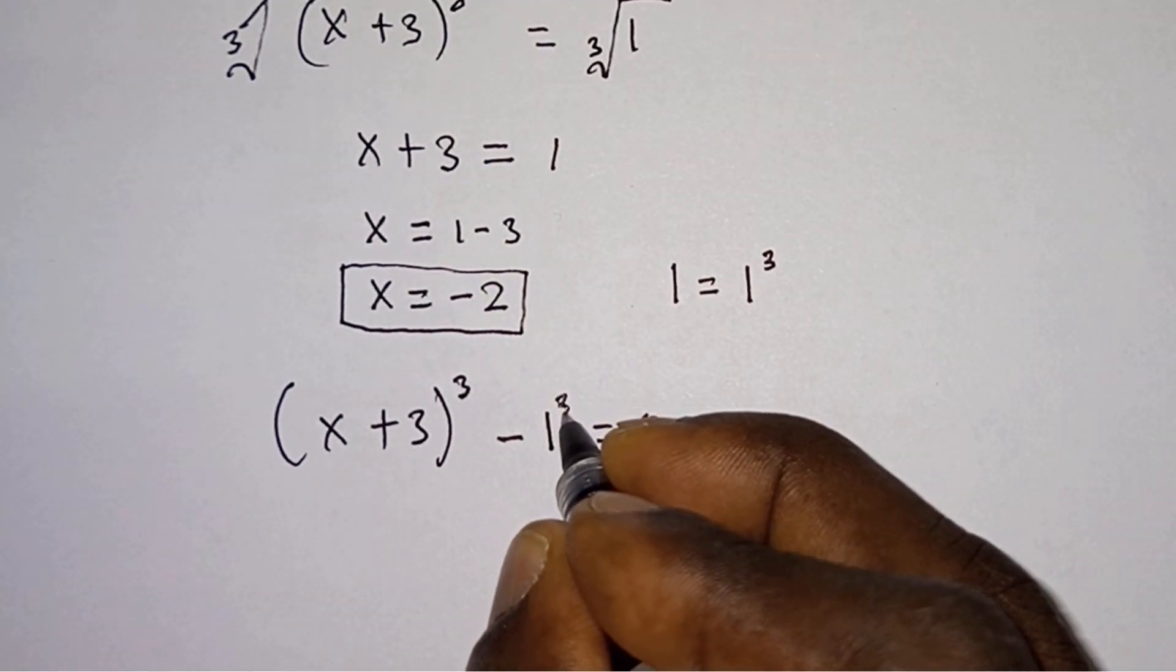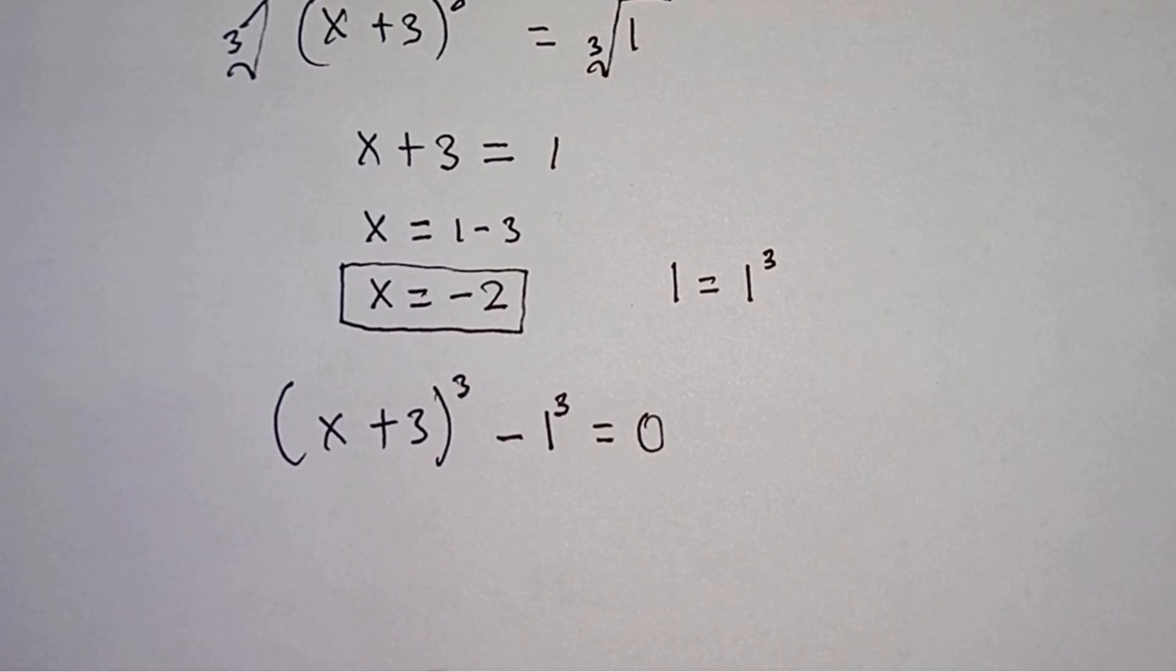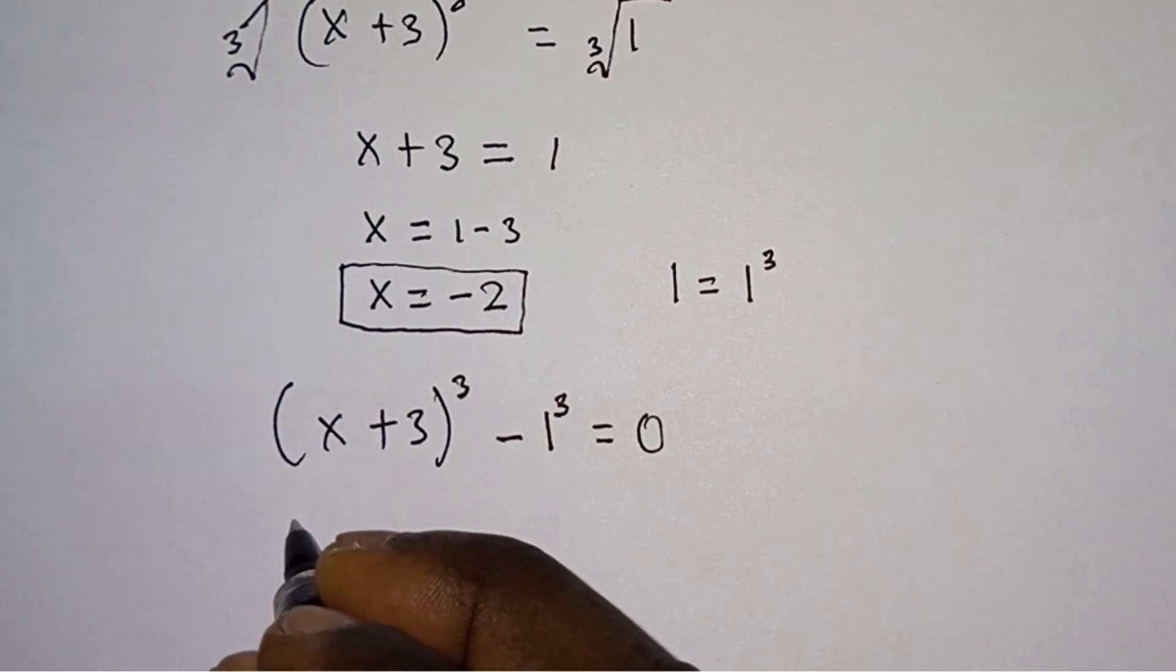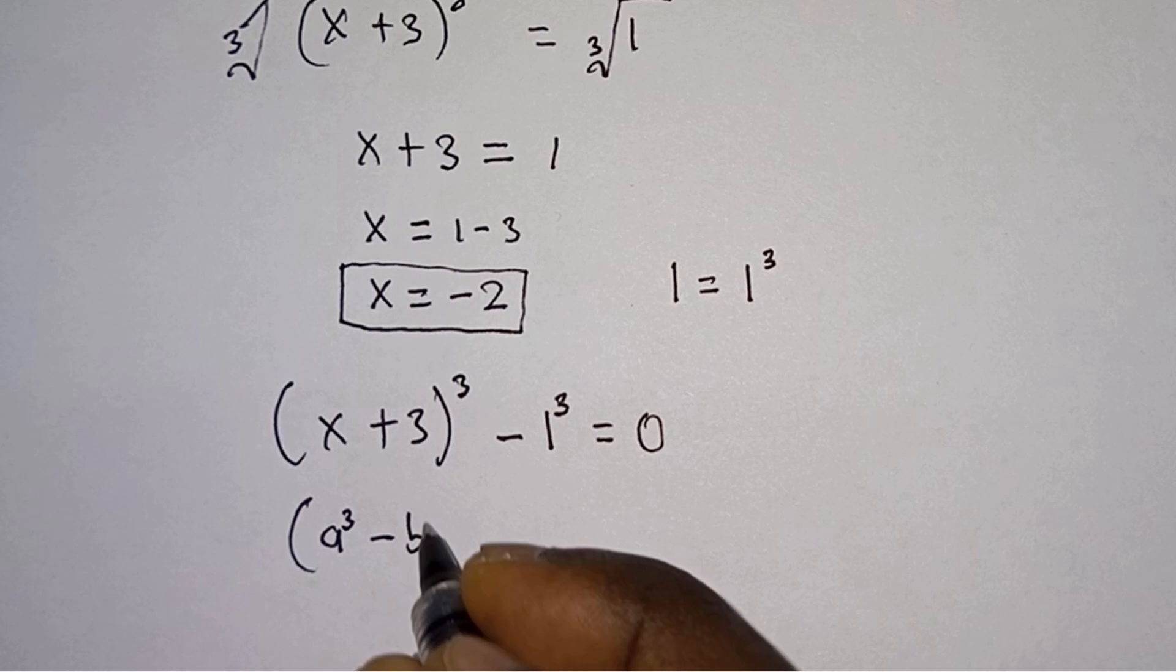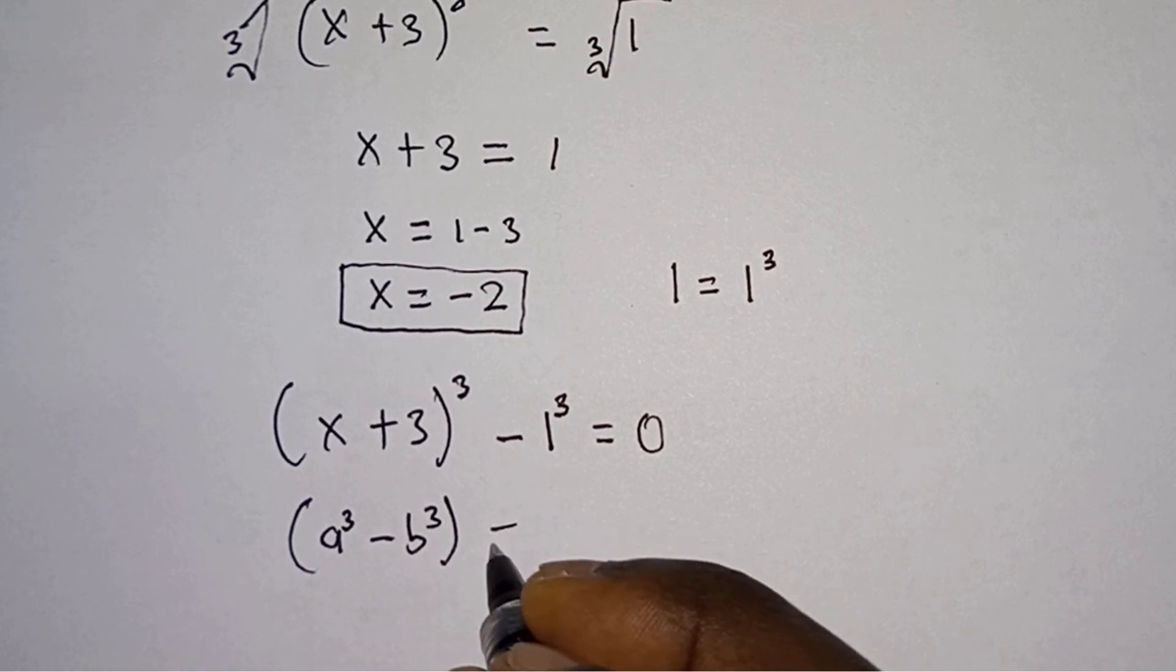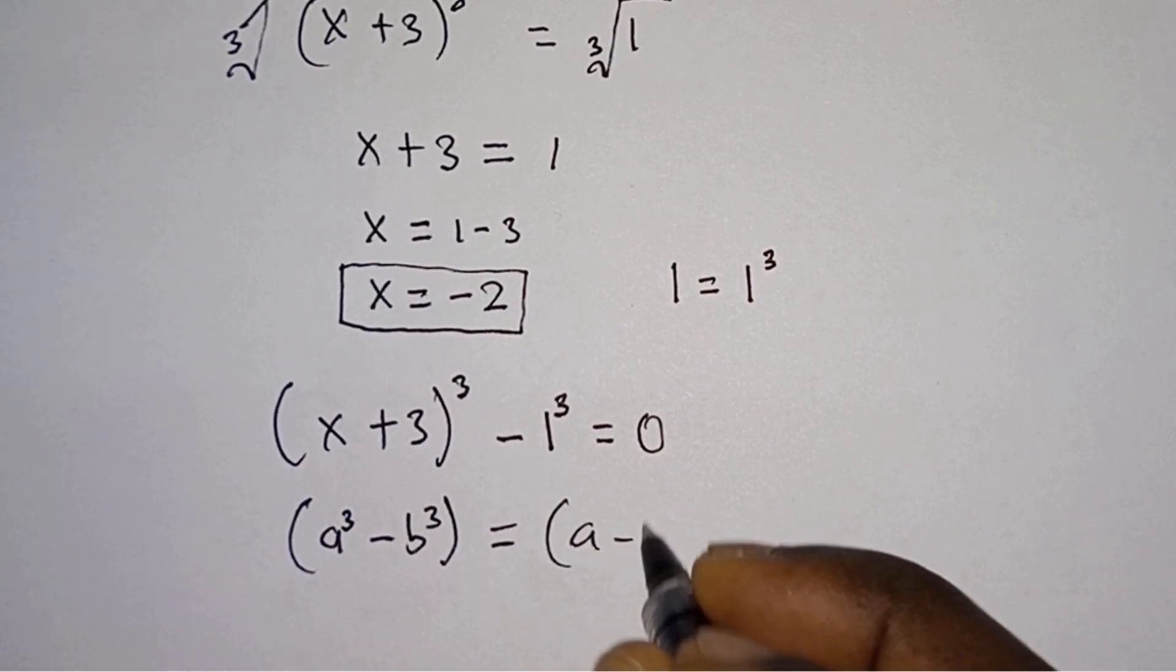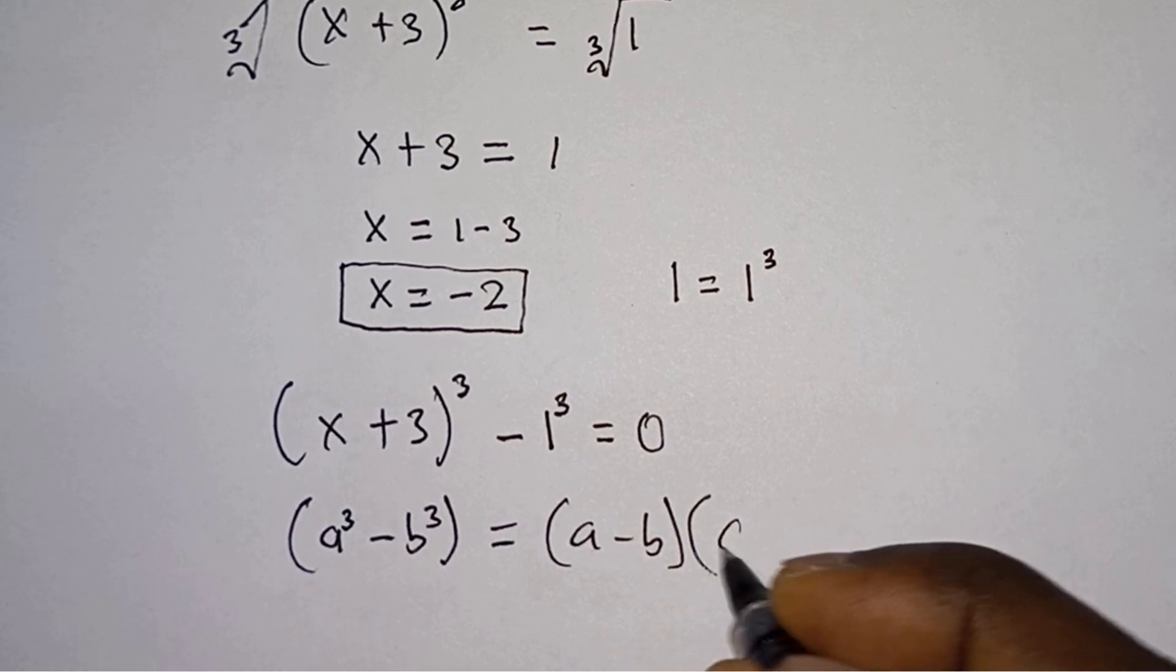One could be written in so many forms. It could be written as 1 to the third power, right? So let's go ahead and cube this one. Then from here we will apply the algebraic identity: a³ minus b³ equals a minus b times a² plus ab plus b².